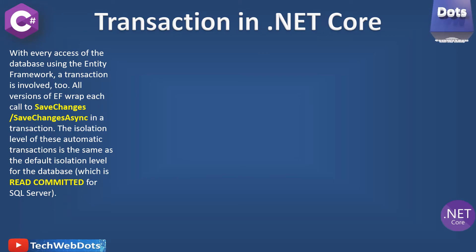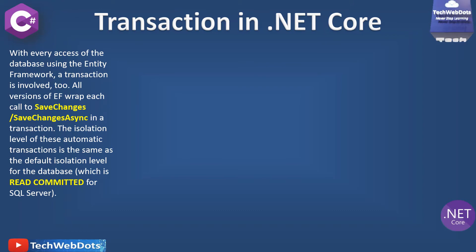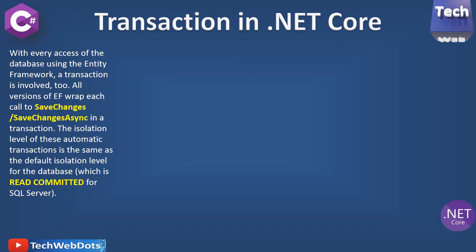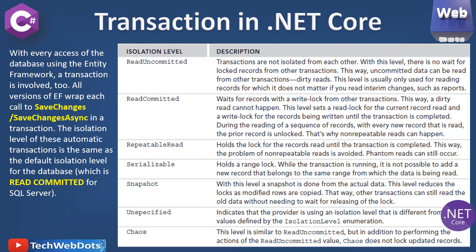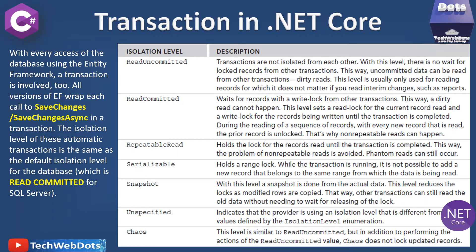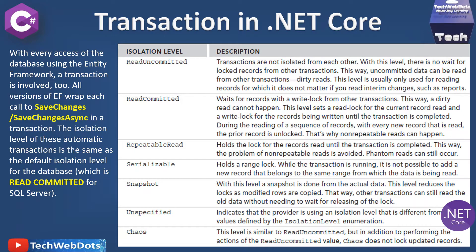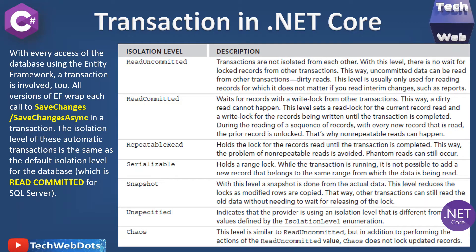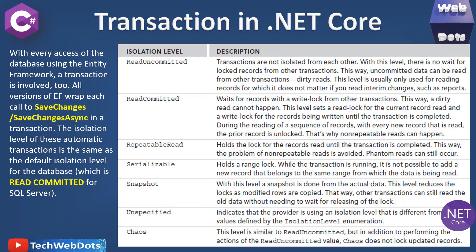The isolation level of these automatic transactions is the same as the default isolation level for the database, which is Read Committed for SQL Server. If you are not aware of isolation levels, I have a detail here — you can pause on this screen and read the complete detail. The Read Committed level says: wait for the record with a write lock from other transactions. This way a dirty read cannot happen.